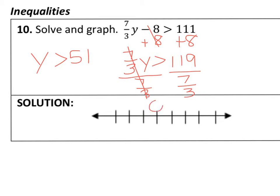So I'm going to come down here and graph it and put 51, and looking at my sign here, as long as my variable comes first, this is like an arrow telling me which way, which direction to shade.